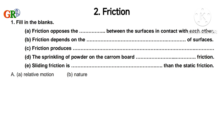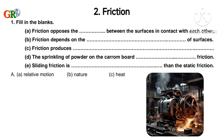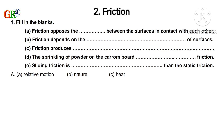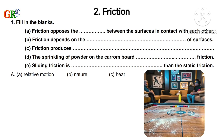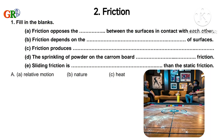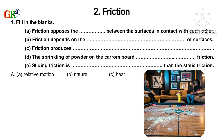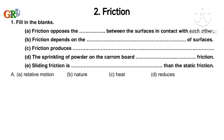C. Friction produces heat. D. The sprinkling of powder on the carom board reduces friction.